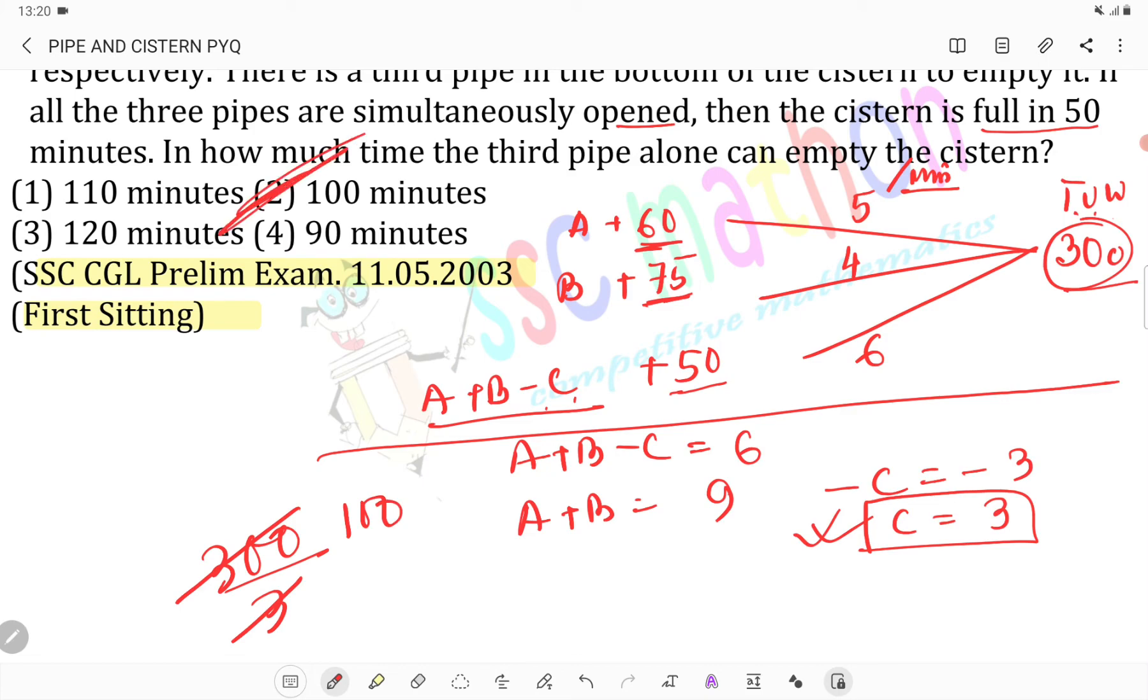300 units divided by 3 units per minute equals 100 minutes. Option number 2 is the correct answer. Okay sir, thank you. Bye bye, stay tuned for the next class.